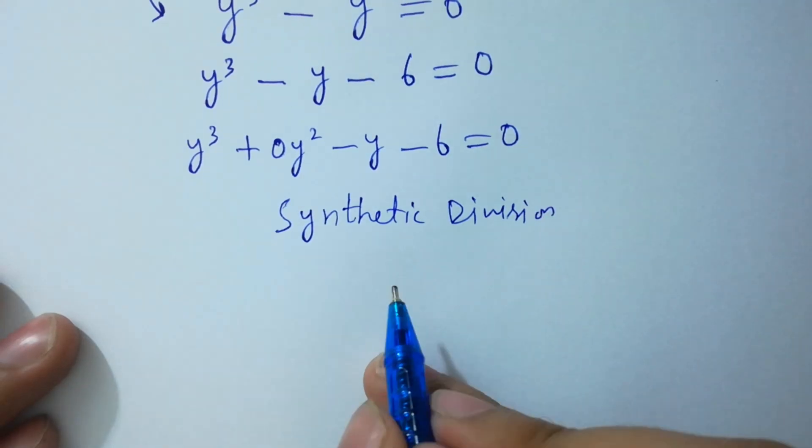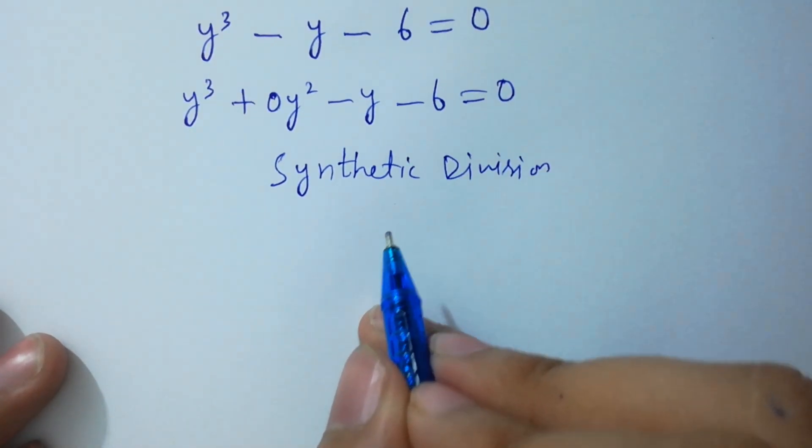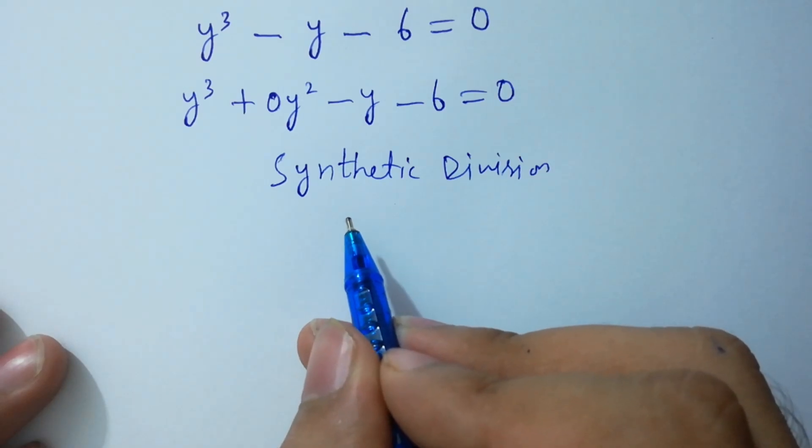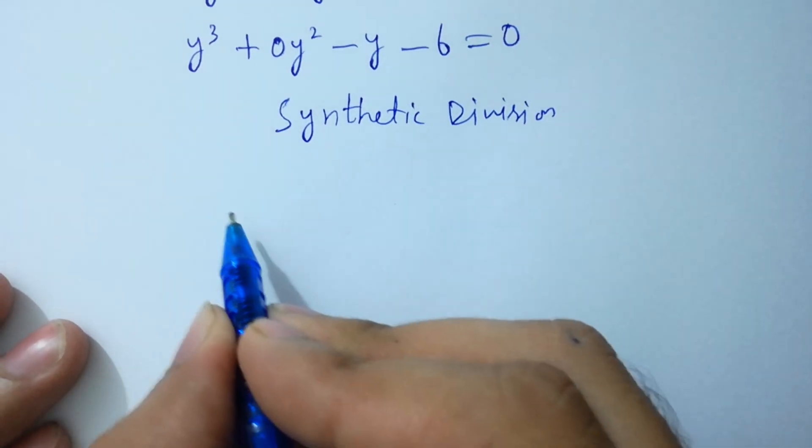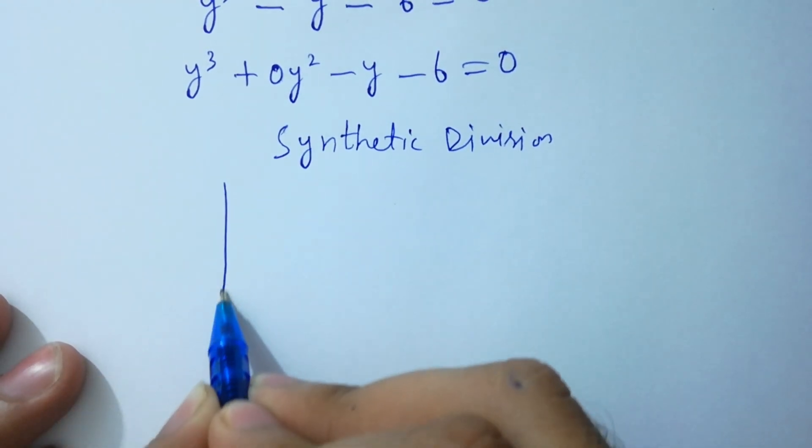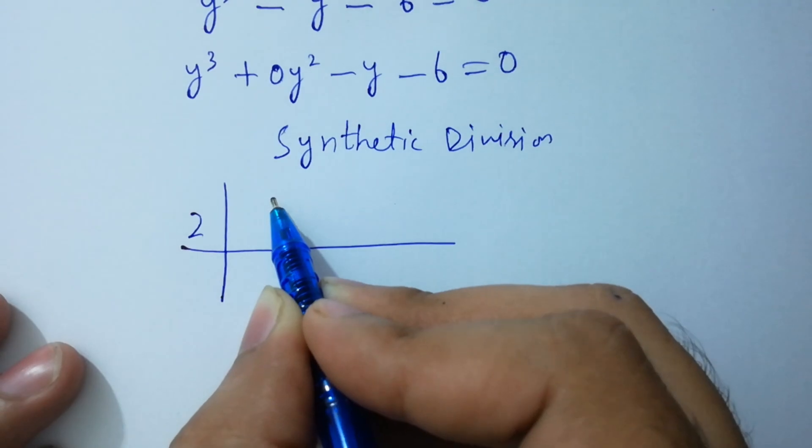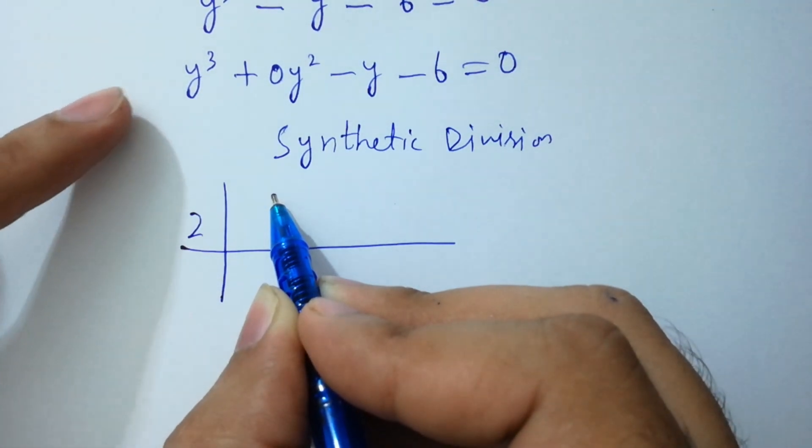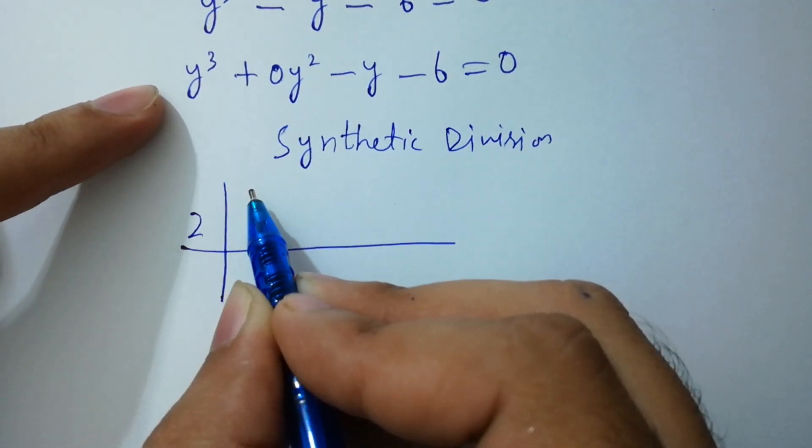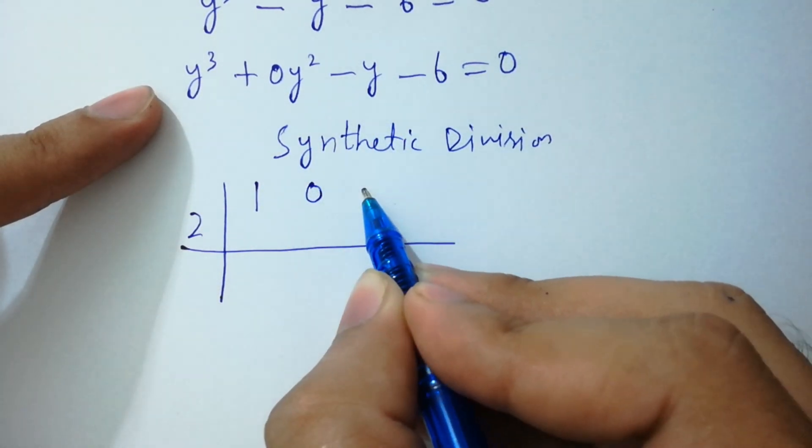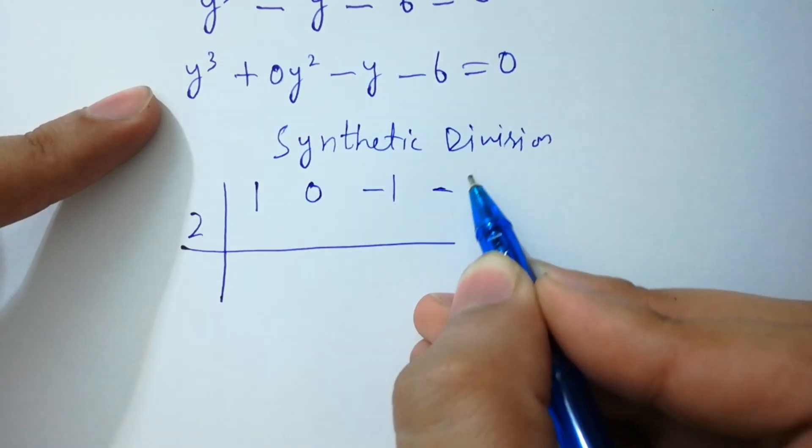Let's see if y equal to 2 is a solution that would make y minus 2 a factor. For test, write here the coefficients: this has coefficient 1, this has 0, this has minus 1, minus 6.